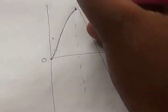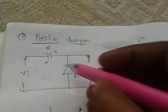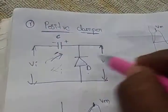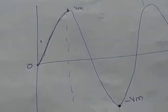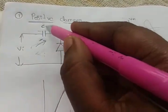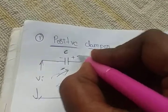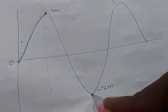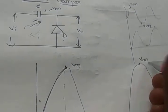From plus Vm to minus Vm, the capacitor charges. While the capacitor is in charging mode there is no output. When it reaches minus Vm, the capacitor is completely charged and stores a voltage of minus Vm.